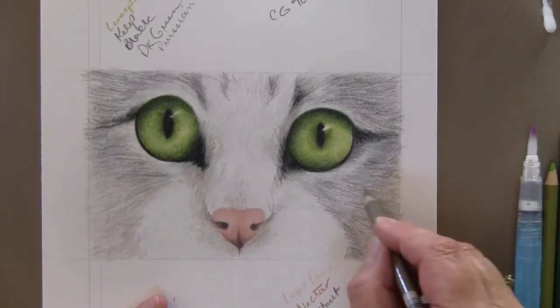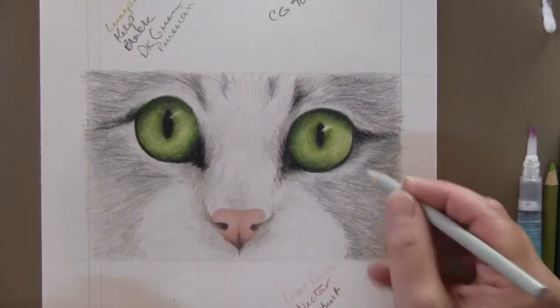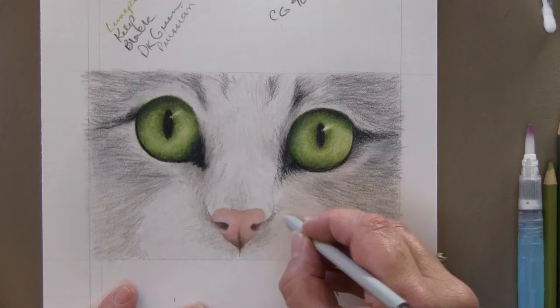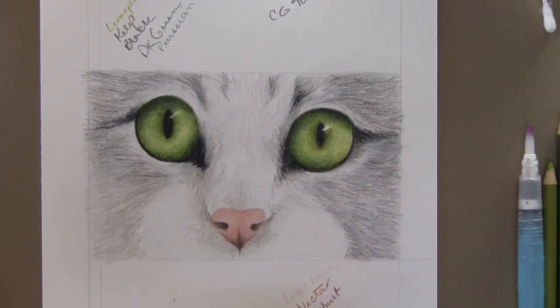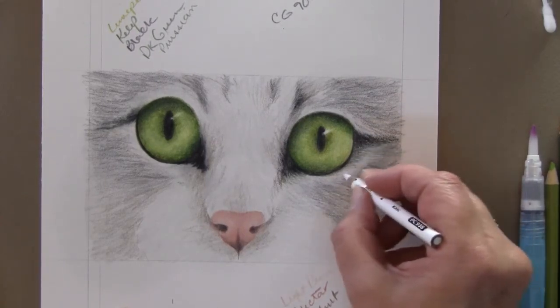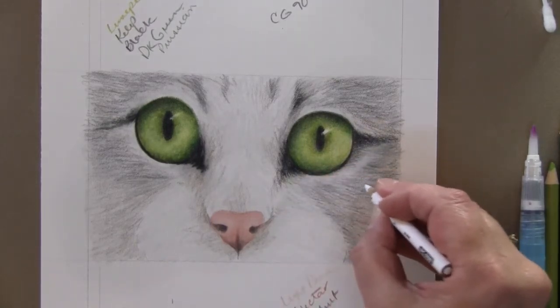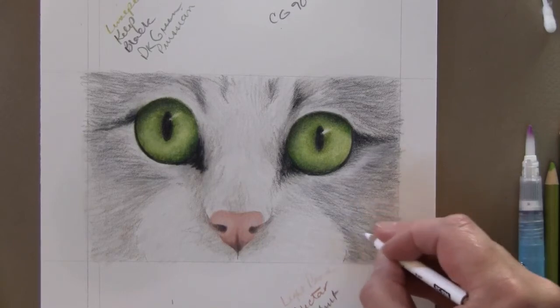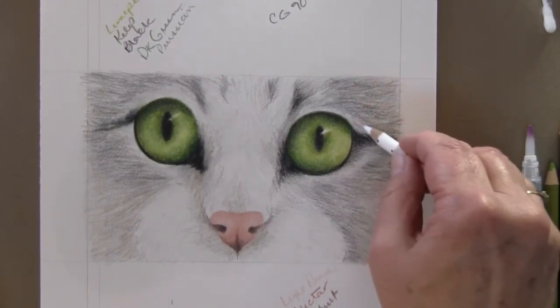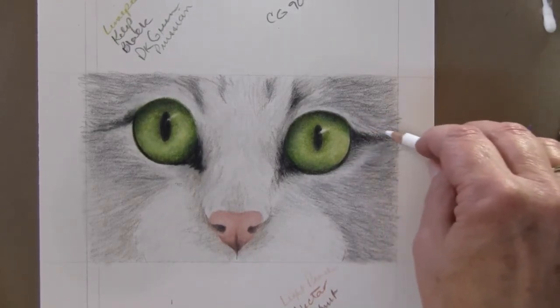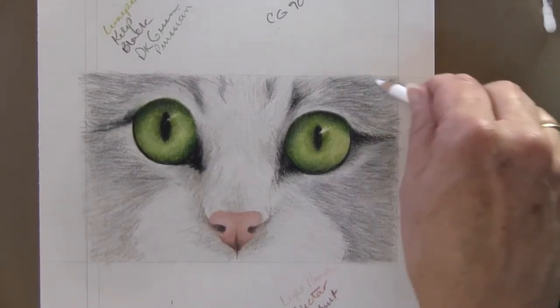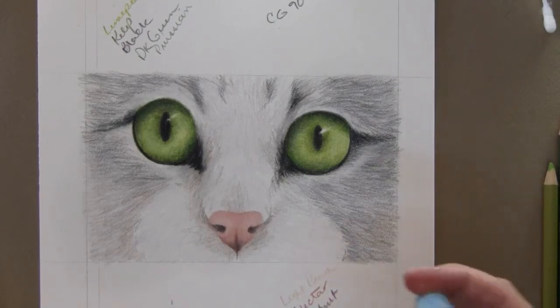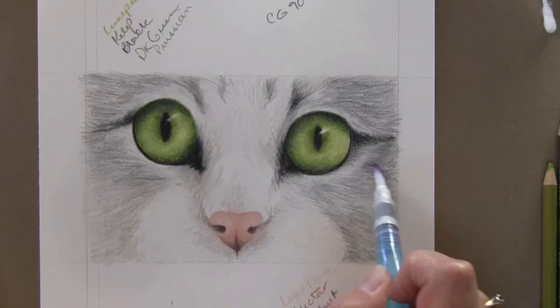And I've got the Warm Gray. Now with the white, this will act a little bit like the colorless blender. I'm sort of smoothing out a few of the strokes. Now this kitty is not a solid gray. I'm looking for more of a silver tip look. Light gray and dark gray. And then I'm going to put the OMS on again.